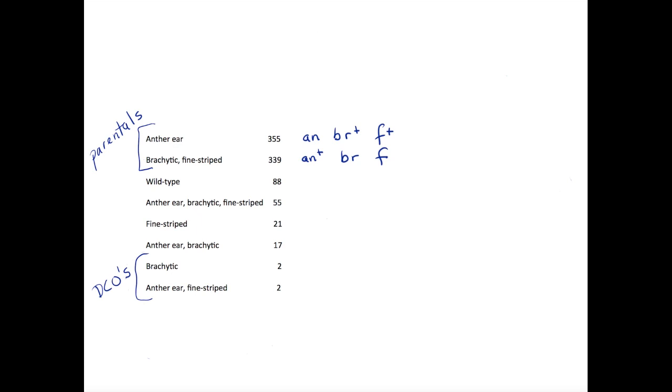Compare these phenotypes to those of the most frequent pair. Which trait differs in these two groups? The gene for this trait must be the one in the middle. In our problem, we see that fine-striped was originally associated with brachytic in the parent, but is coupled with anther-ear in one of the double crossover phenotypes. This means that the F gene must be in the middle. We can now rewrite the linkage arrangement of the F1 to reflect this information.